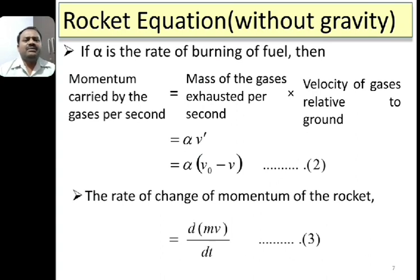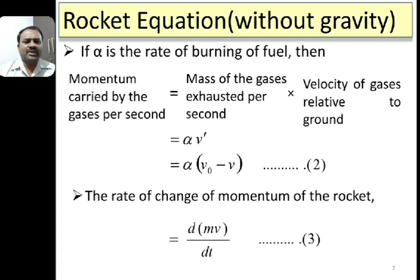The momentum carried by gases per second equals mass of gases exhausted per second multiplied by velocity of gases relative to ground. Mass of gases exhausted per second is the same as the rate of burning of fuel, denoted alpha. So momentum carried by gases per second is alpha × v'. Substituting v' from equation 1, we get momentum of gases per second = alpha × (v0 − v). Let this be equation 2.